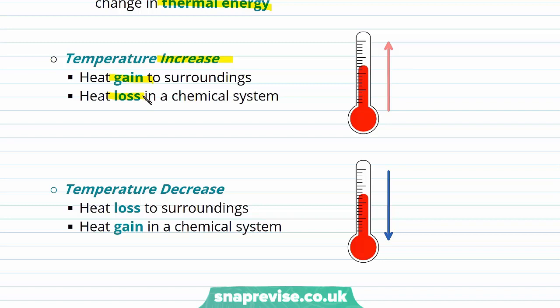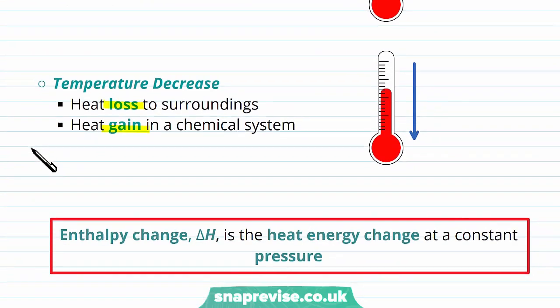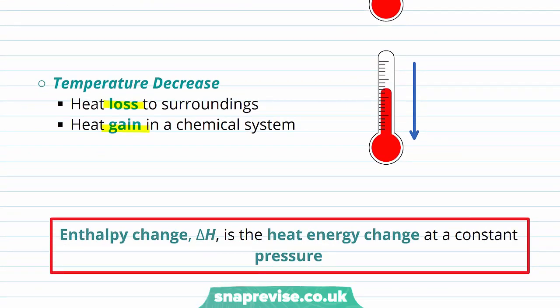A temperature decrease would indicate a heat loss to the surroundings and a heat gain in the chemical system. And finally, enthalpy change — delta H — is the heat energy change at a constant pressure.